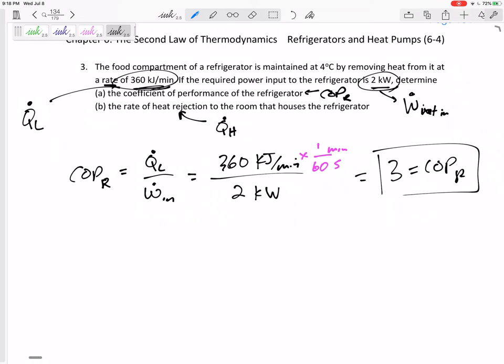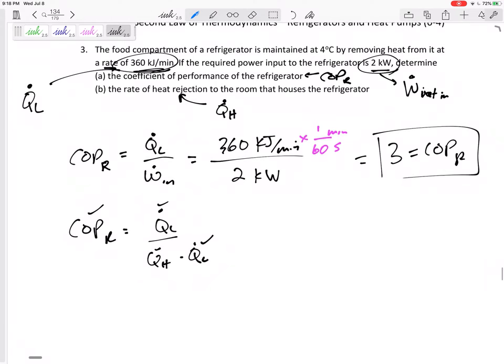And then part B, the rate of heat rejection, Q_H. I've got a couple of equations. Now that I've found COP, I could say COP is Q_L over Q_H minus Q_L. And since I know those, I could find Q_H. Or that would actually be going around the block, doing too much work. I know the work, the net work, and I know that the net work is Q_H minus Q_L.